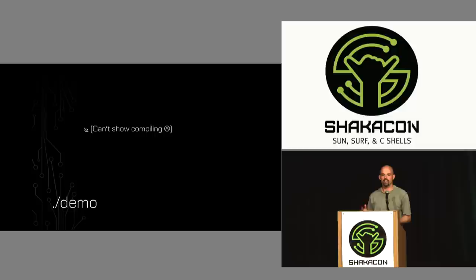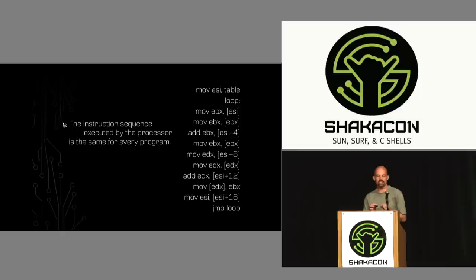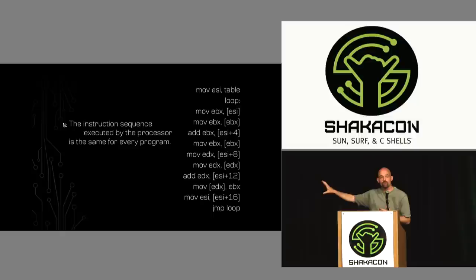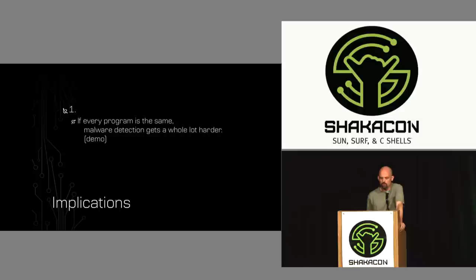You might think: doesn't an emulator or interpreter do essentially the same thing — one program executing many different programs? There's an important distinction: an emulator reads one instruction from the program it's emulating and decides what to do based on that instruction — it does different things for an add versus a sub instruction, taking different paths. With this reduced code, you could attach an in-circuit emulator to the processor and see it executing the exact same instructions over and over, regardless of what program it's actually running.